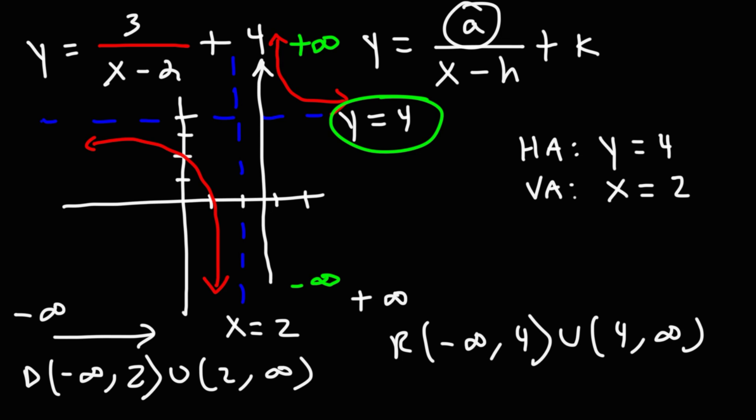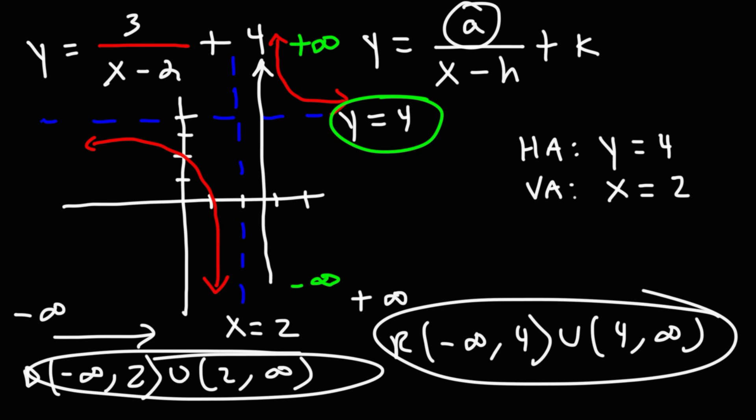Here's what you need to know. When writing the domain and range for a reciprocal function, you need to remove the vertical asymptote from the domain. And you need to remove the horizontal asymptote from the range.